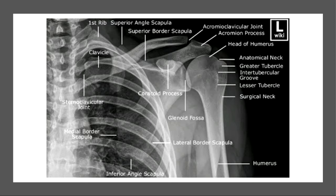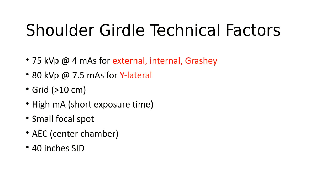For the shoulder girdle, there are four routine views: external rotation, internal rotation, Grashey method, and Y lateral. For the internal, external, and Grashey views, we use 75 kVp at 4 mAs. For the Y lateral, because positioning is different and you're going through more tissue, we use 80 kVp at 7.5 mAs. We are on a grid for all of these.